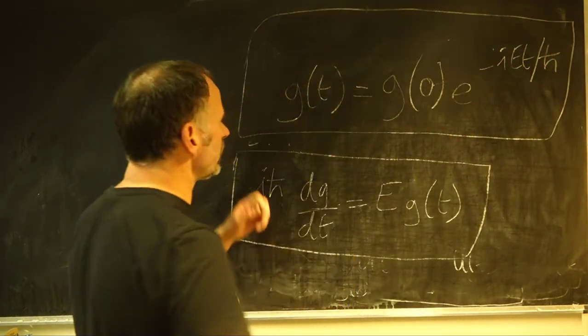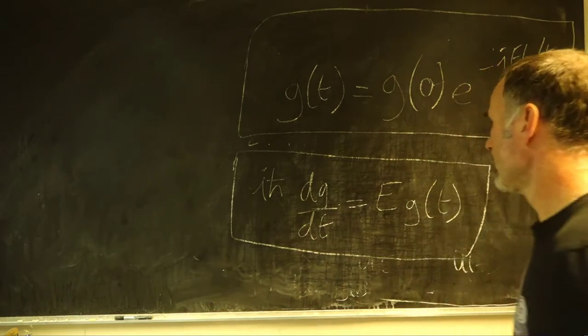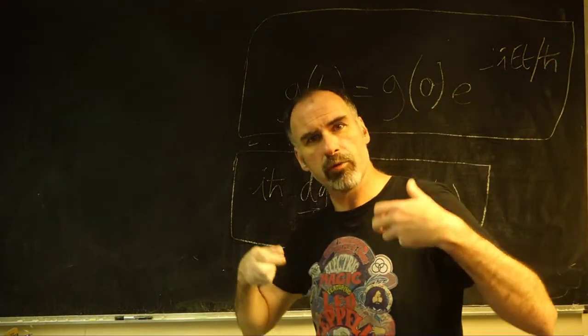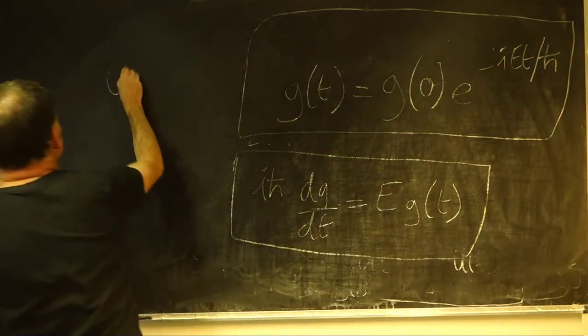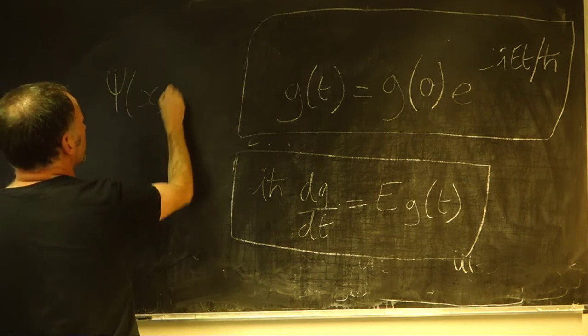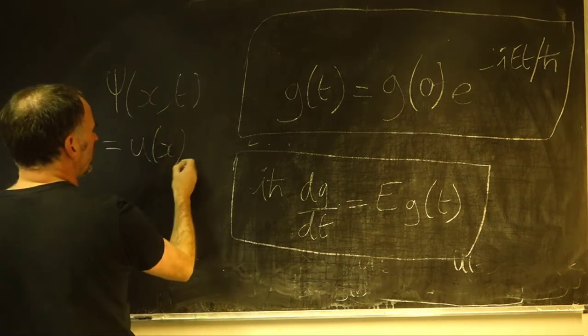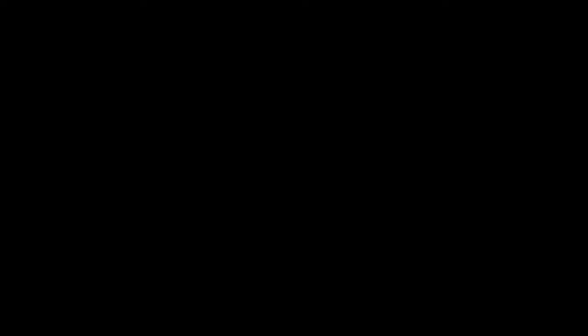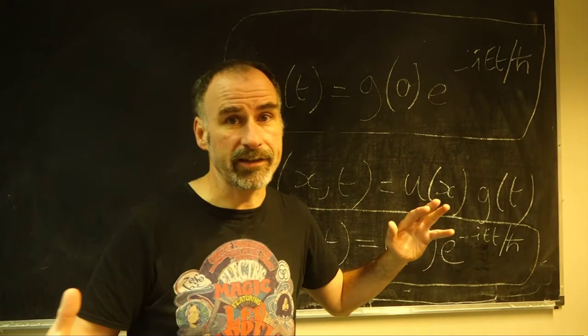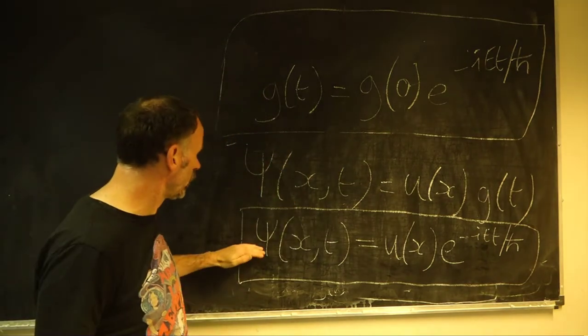So, this gives us our time dependence. And because, remember, that we said that our ψ(x,t) was a product of our spatial and our temporal functions. So, we end up with this, in terms of our solutions.